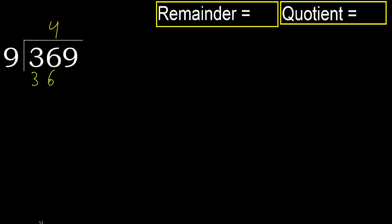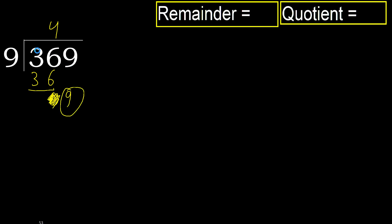Ok. Subtract: 36 minus 36 is 0. Next, bring down 9. 9.